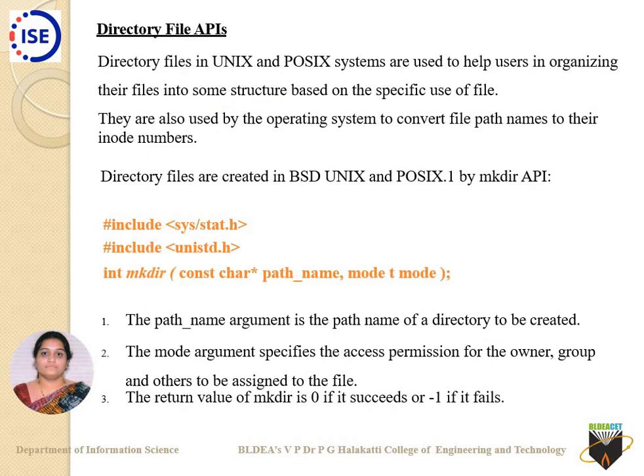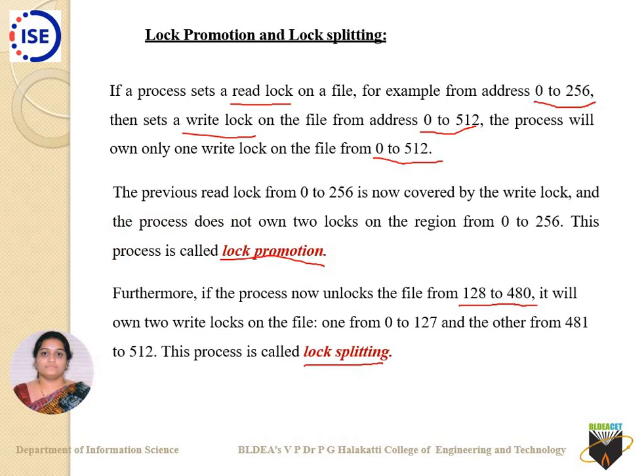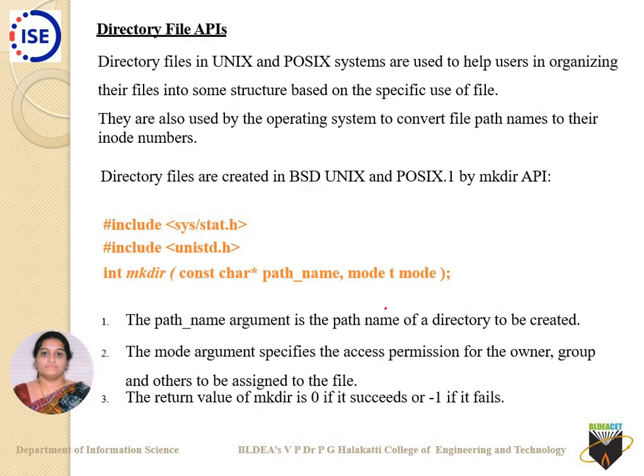This is the fcntl API for file and record locking. In our next class, we will cover directory file APIs and other file APIs. Thank you.